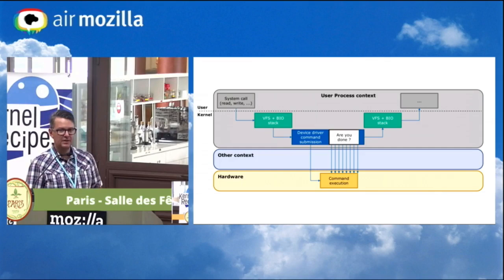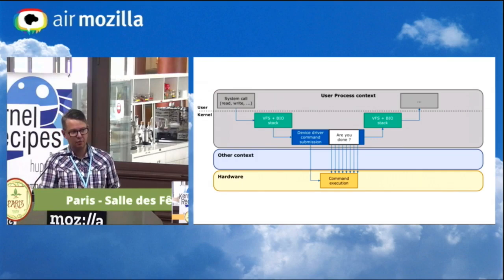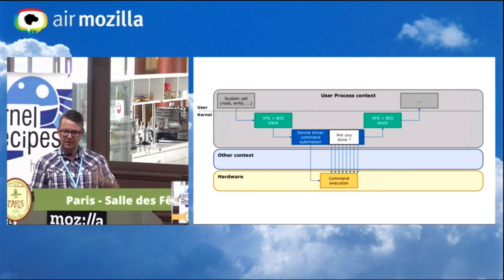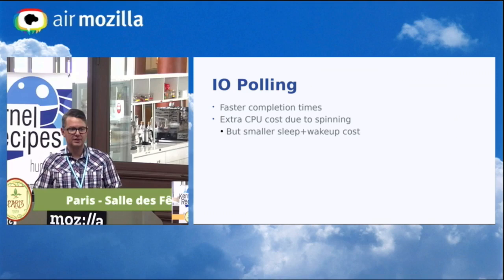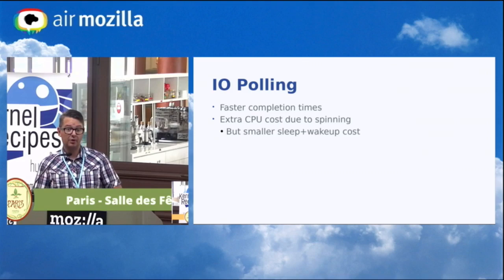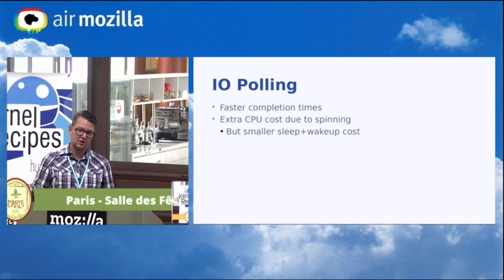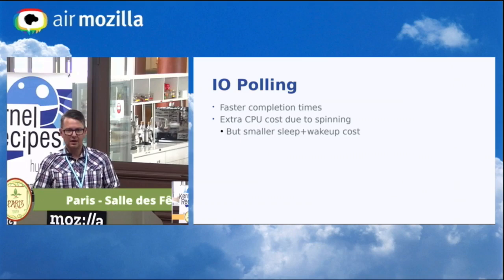For polling, instead of going to sleep, the application sits in a very tight loop asking the device 'is my work done?' until it says yes. This means we get faster completion times — eliminating the microseconds spent going to sleep and waking up. The downside is power consumption: it's obviously better to put the CPU into a deeper sleep state. We do check for preemption and abort the polling loop if preemption is required, so it's a trade-off.